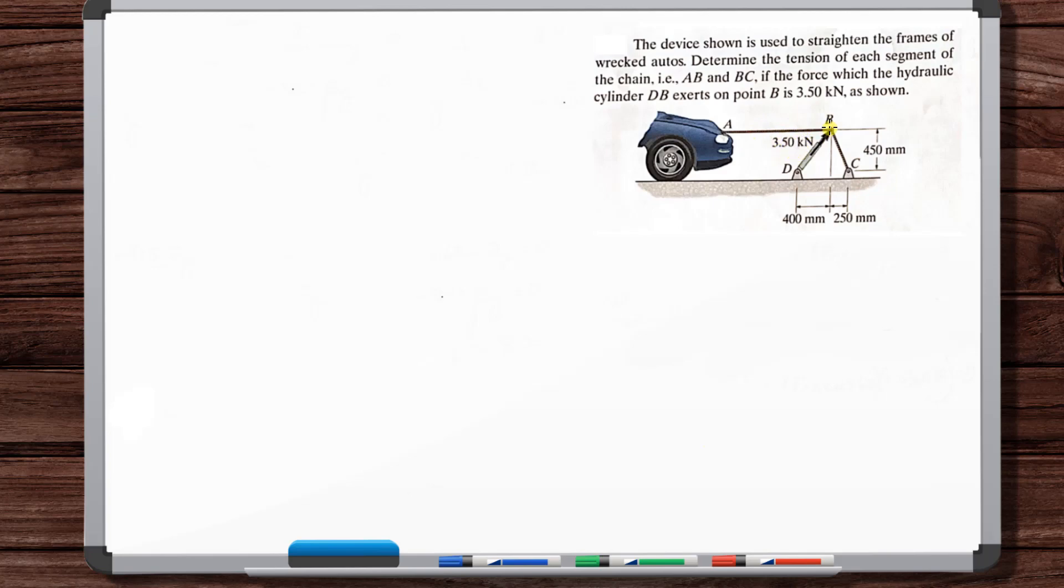To do this, we need to do a free-body diagram of some component. And we're going to do it of this, whatever this piece is at B. It looks like a ring or something.